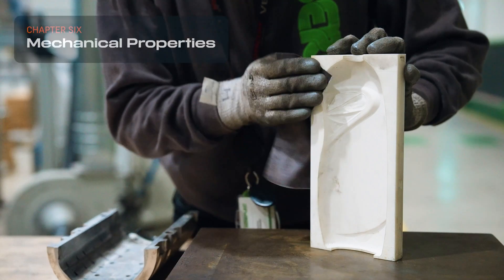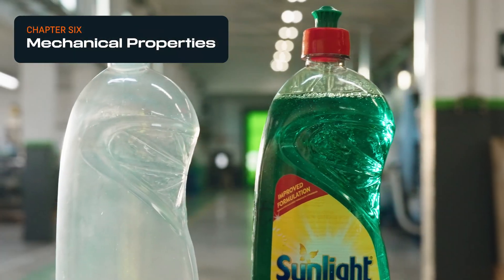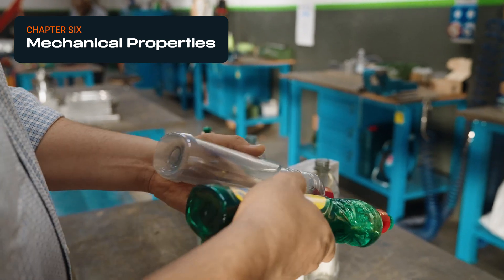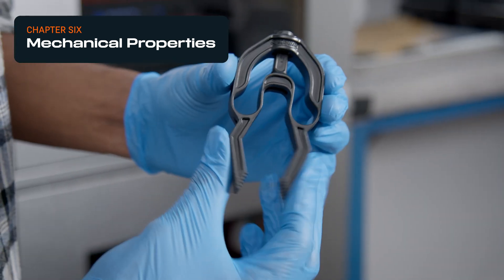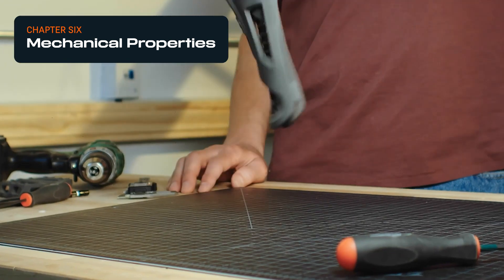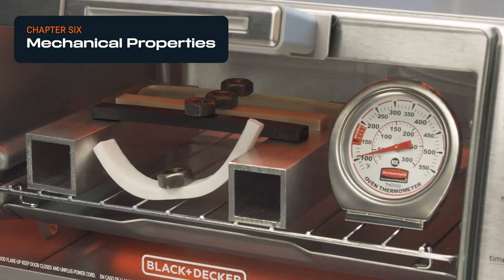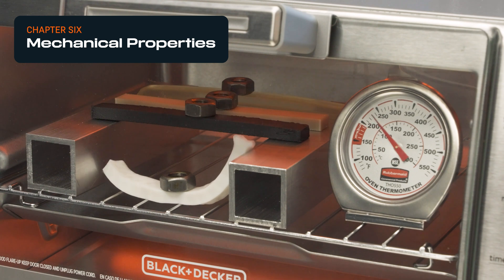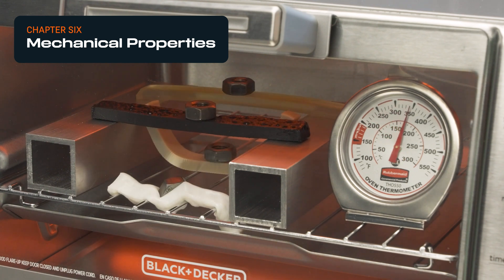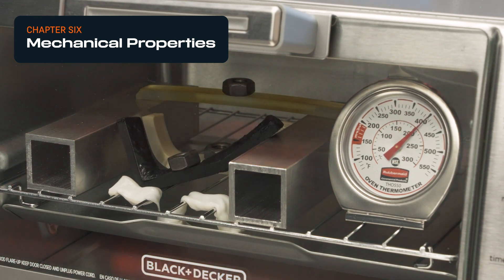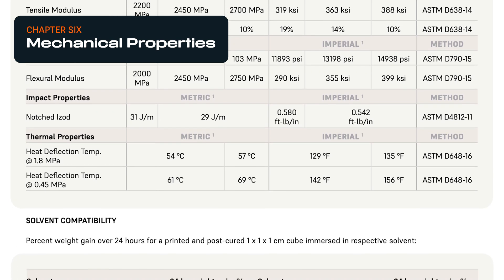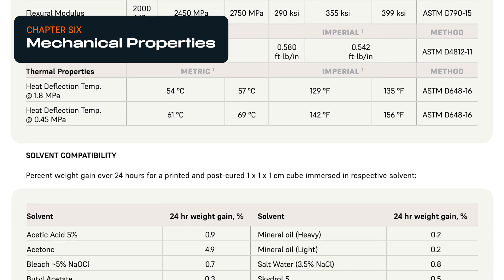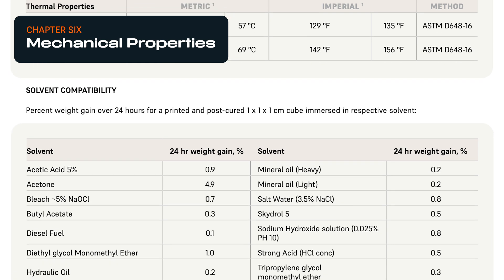Last but not least, mechanical properties. All three printing technologies have material options that optimize for different properties, such as rigidity, impact resistance, and heat resistance, so there is plenty of variation within each printer type. Mechanical properties can be relatively easy to compare by looking at the material's technical data sheets and comparing the metrics that matter for your application to those of materials you may be more familiar with.